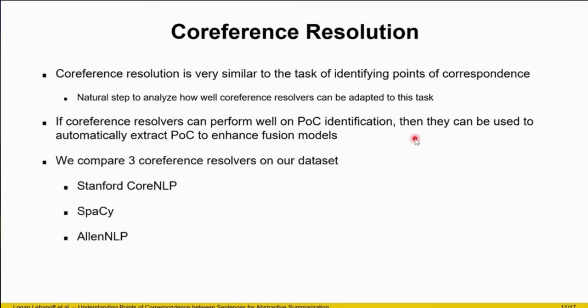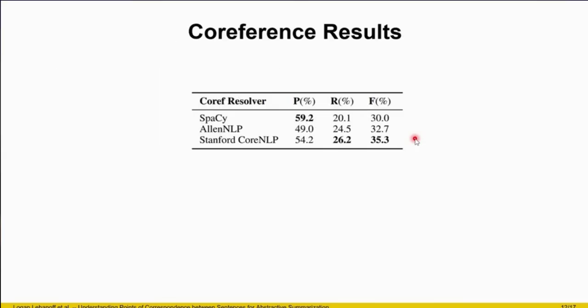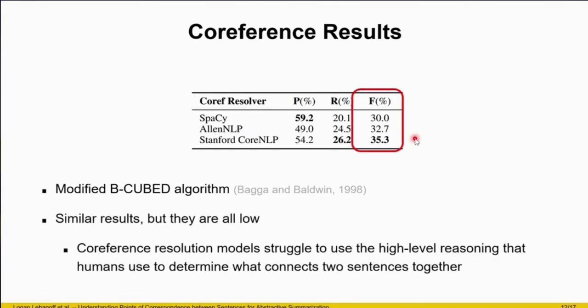We compare three different co-reference resolvers on our dataset. We use a modified version of the B-cubed algorithm to evaluate — you can see the details in the paper. Each resolver has similar results, but they're all quite low, with about 30% F1 score. This shows that co-reference resolution models struggle to use the high-level reasoning that humans use to determine what connects two sentences together.